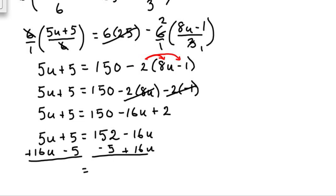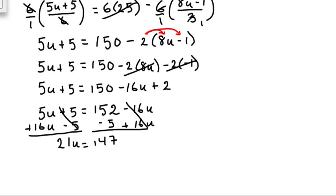The positive 5 and negative 5 add up to zero. 5u plus 16u is 21u, and the negative 16u and positive 16u cancel to zero. 152 minus 5 is 147. Our last step is to divide both sides by 21, since 21 is acting as a multiplier. 21 divided by 21 gives us 1, so our answer is u equals 7.